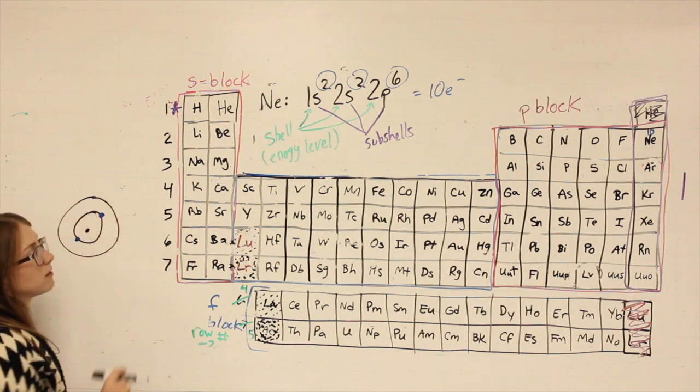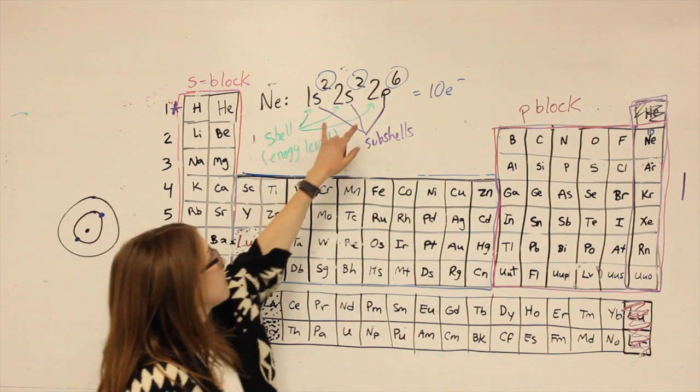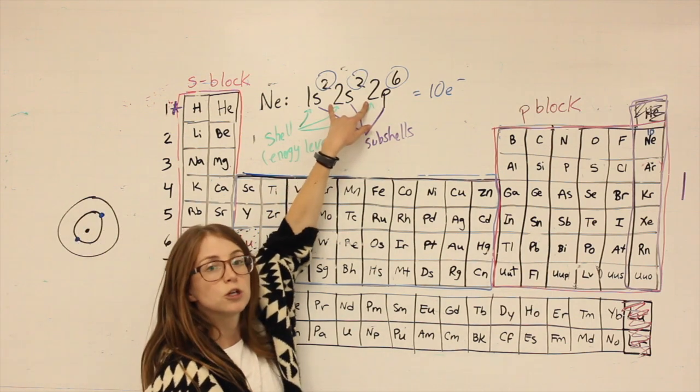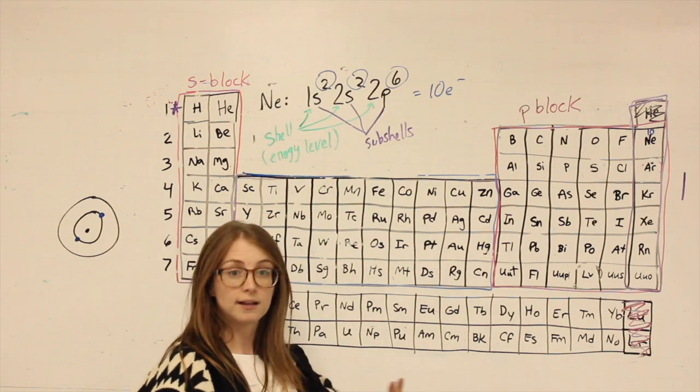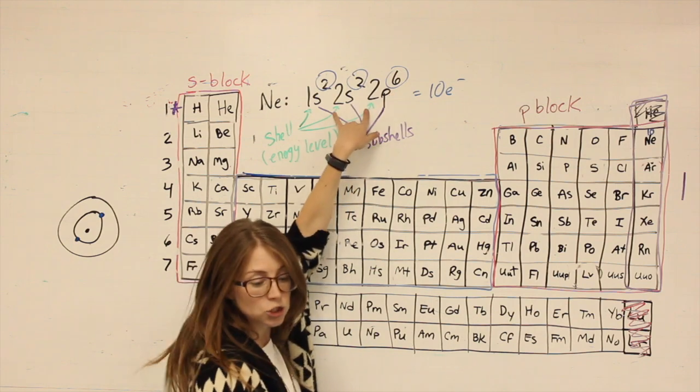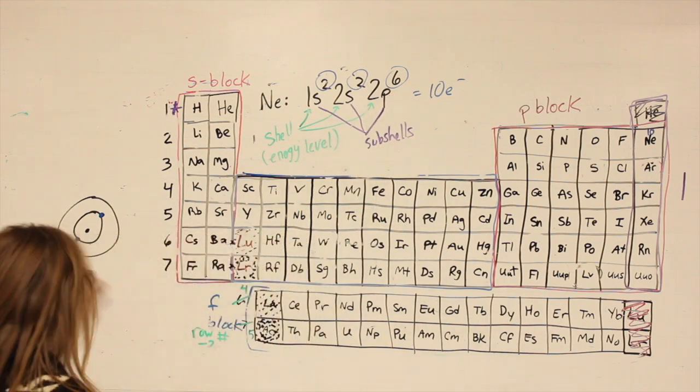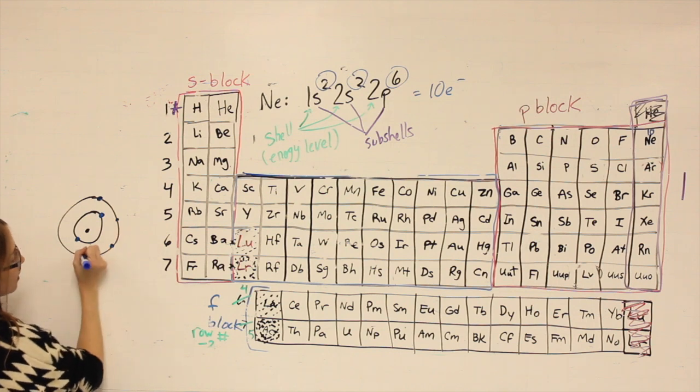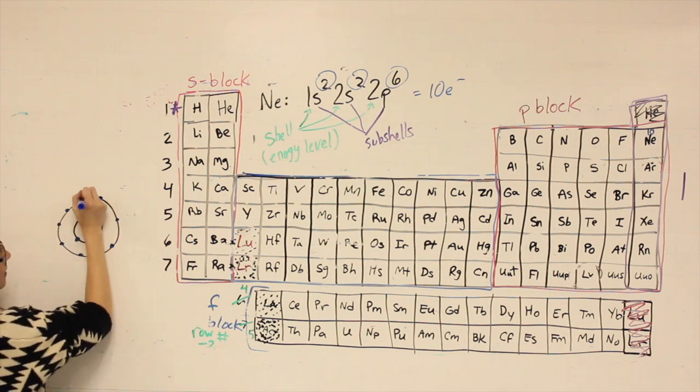The second shell for neon is anything that has that coefficient of 2. You probably learned in middle school that the second shell can hold 8 electrons. 2 and 6 are both in the second shell. Neon has 8 electrons in that second shell: 1, 2, 3, 4, 5, 6, 7, 8.